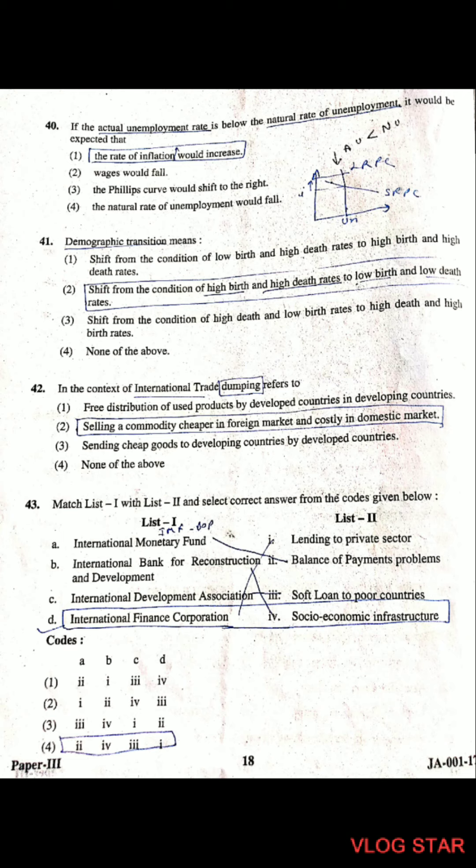Question 42: In the context of international trade, dumping refers to selling a commodity at a cheaper price in the foreign market and at a costlier price in the domestic market — we are dumping our products in another country. The second option is the right answer.